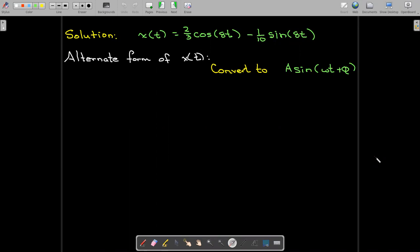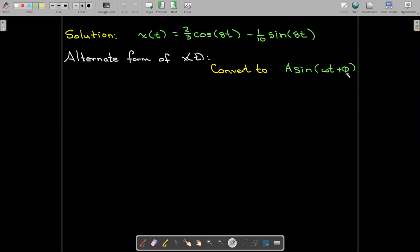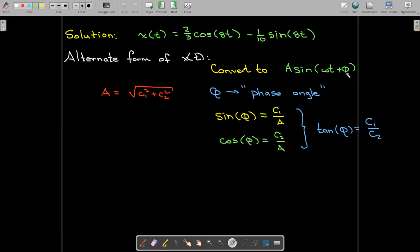Now we may want to write this in an alternate form as just a single sine function with this phase shift here, phi. And you can figure this formula out by just using the double angle formula for sine. And so the way that we would calculate it, then, is the amplitude A is the square root of the sum of the squares of the coefficients on sine and cosine. To calculate phi, which is the phase angle, we would use these equations here, which essentially tell us that the tangent of phi is c1 over c2.